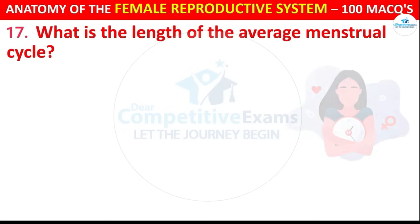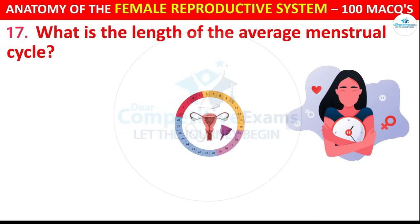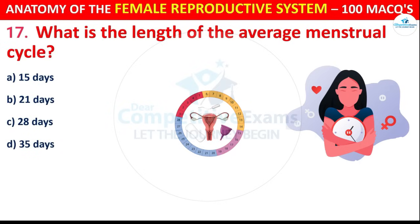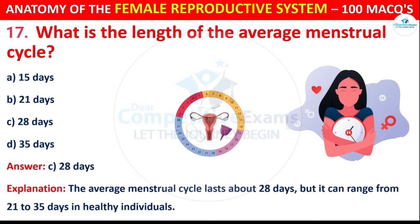Question number 17: What is the length of the average menstrual cycle? Options are: 15 days, 21 days, 28 days, or 35 days. The correct answer is C, i.e. 28 days. The average menstrual cycle lasts about 28 days, but it can range from 21 to 35 days in healthy individuals.